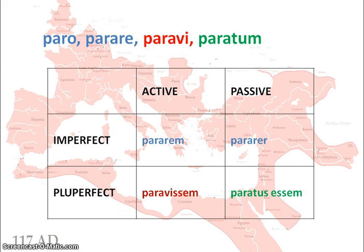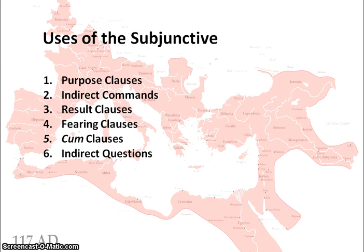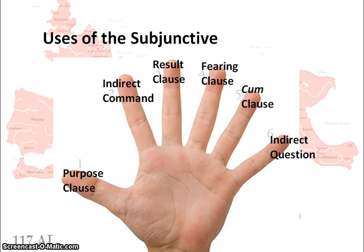It's important to note that at GCSE there is only the imperfect and pluperfect subjunctive. There are six uses of the subjunctive at Latin GCSE: purpose clauses, indirect commands, result clauses, fearing clauses, cum clauses, and indirect questions. A good way to remember this is the six-fingered subjunctive hand of Norfolk.